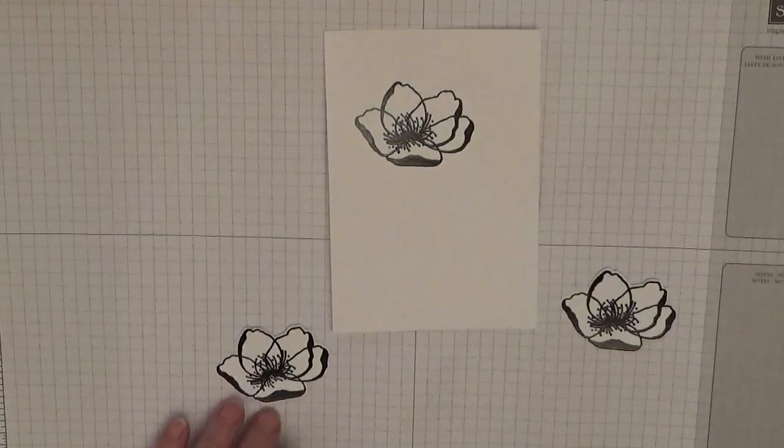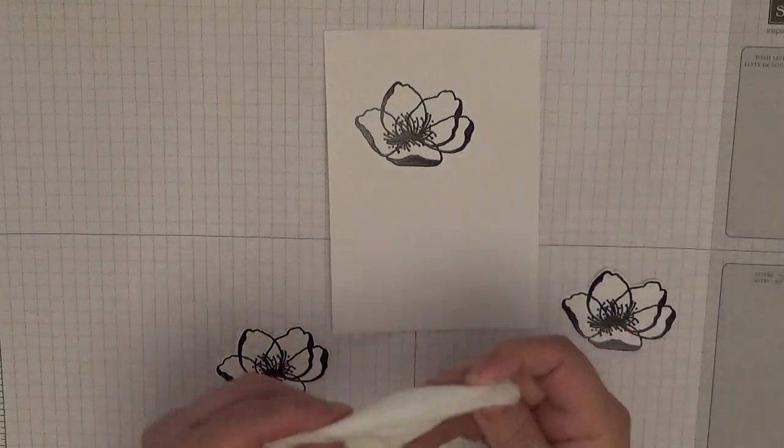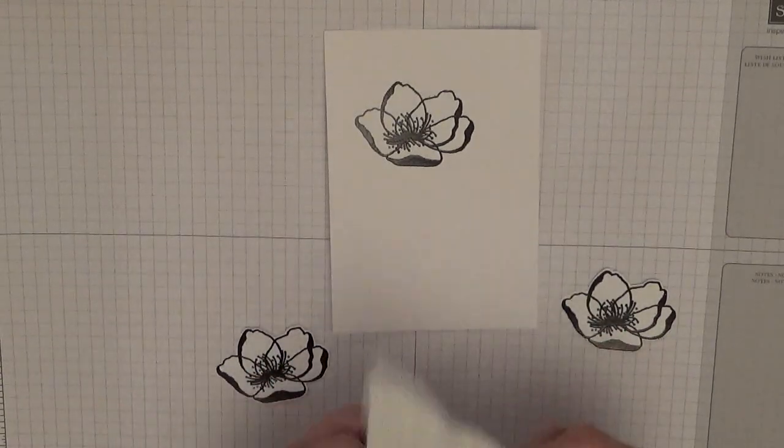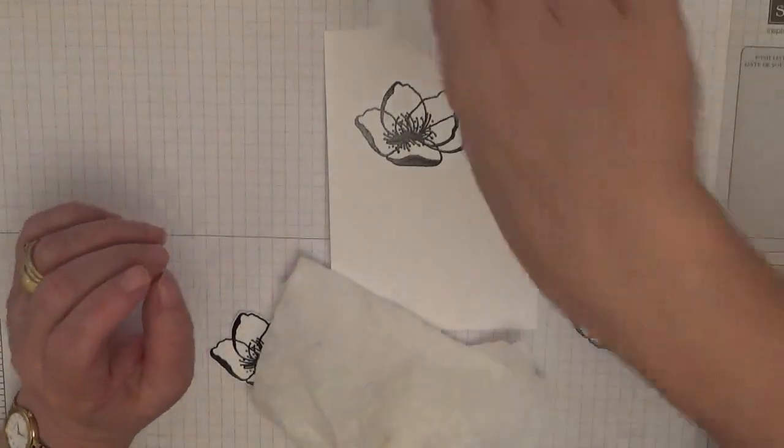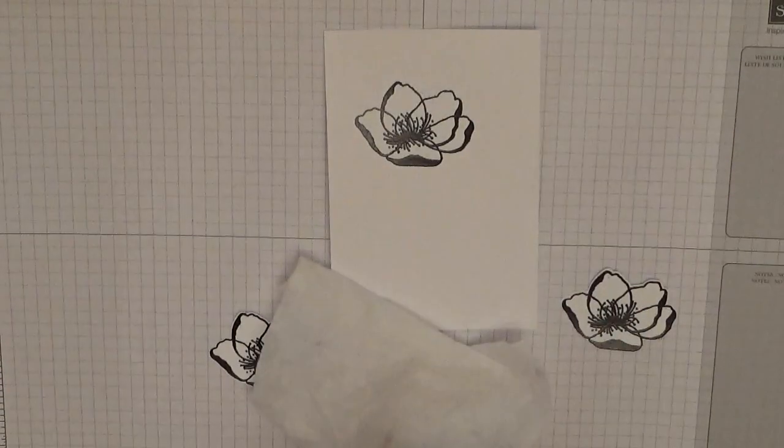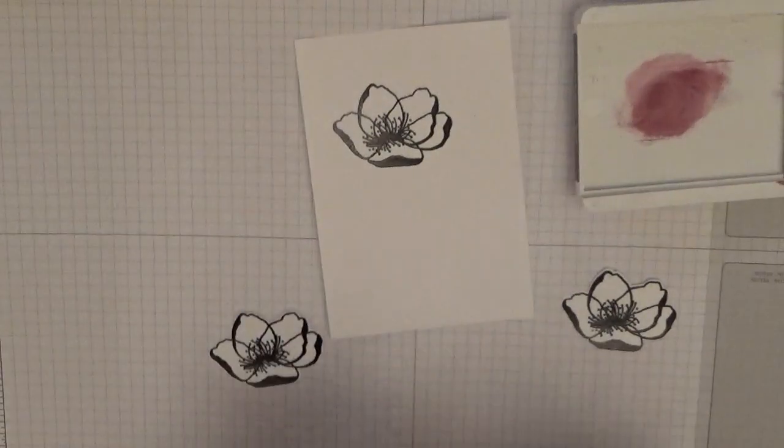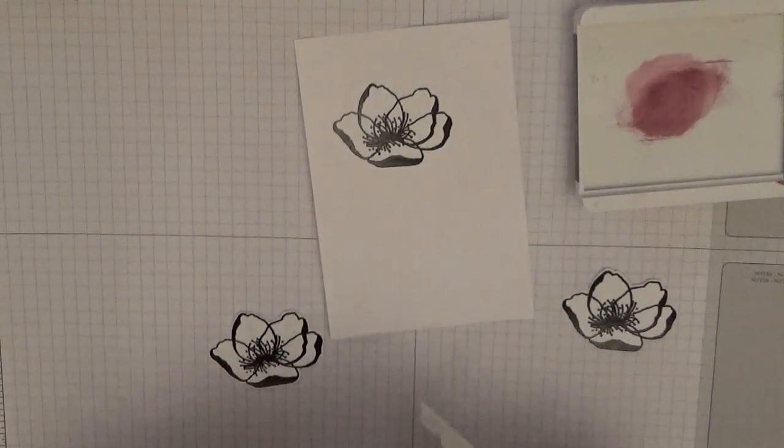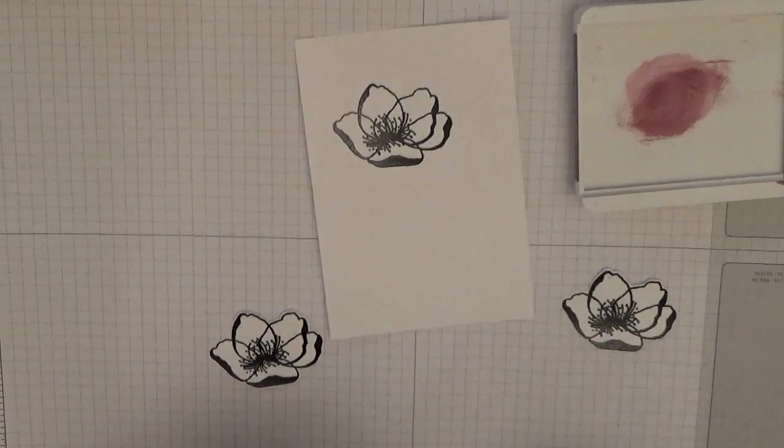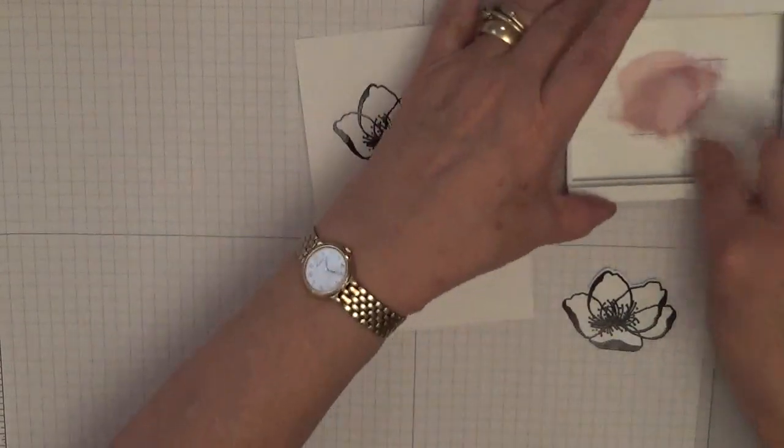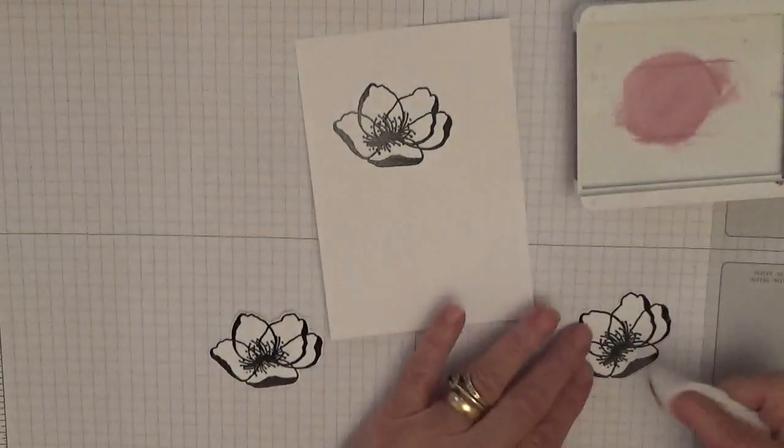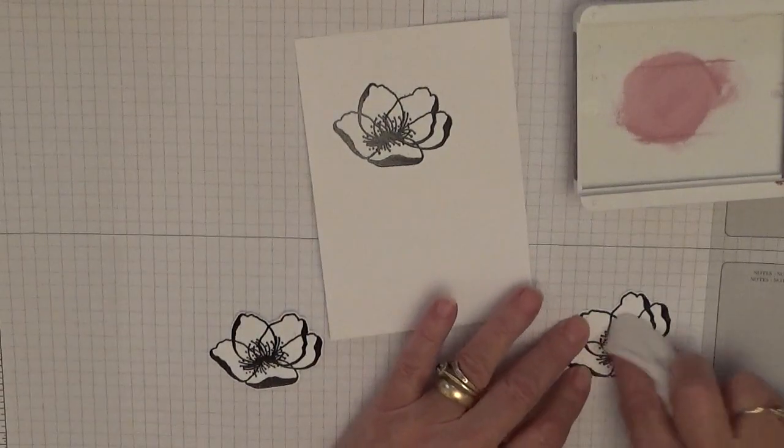To color these flowers in, all I did was get a dry wet wipe. So all you need is a dry wet wipe and your ink. What I did was doubled it up and wrapped it around my finger, picked up some ink, and just rubbed the center of the flower.